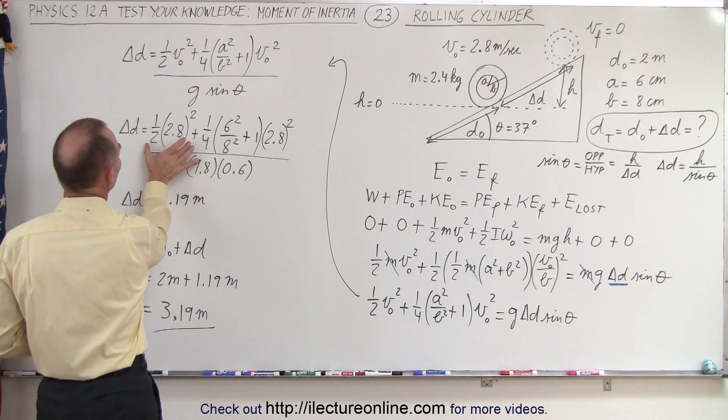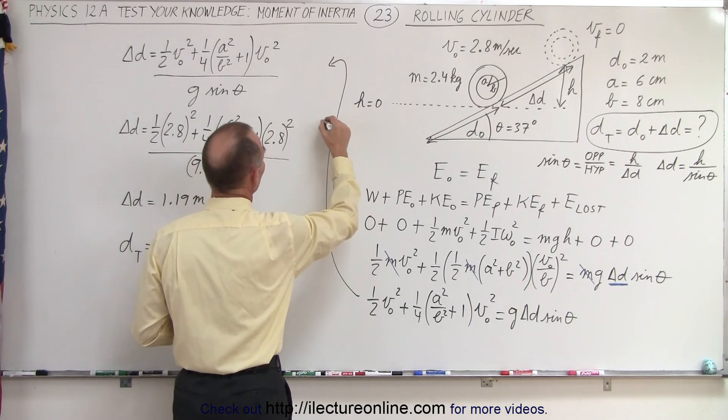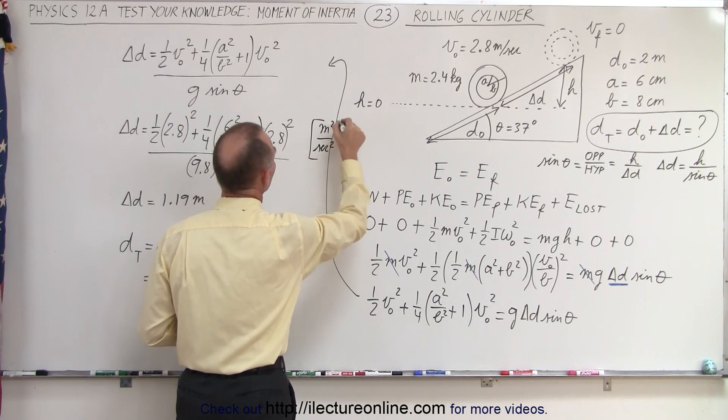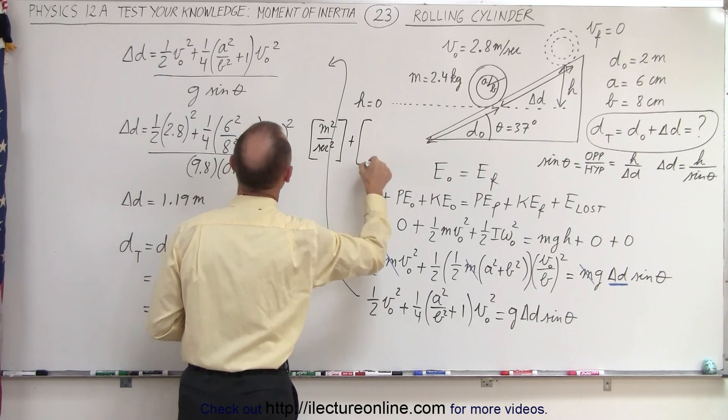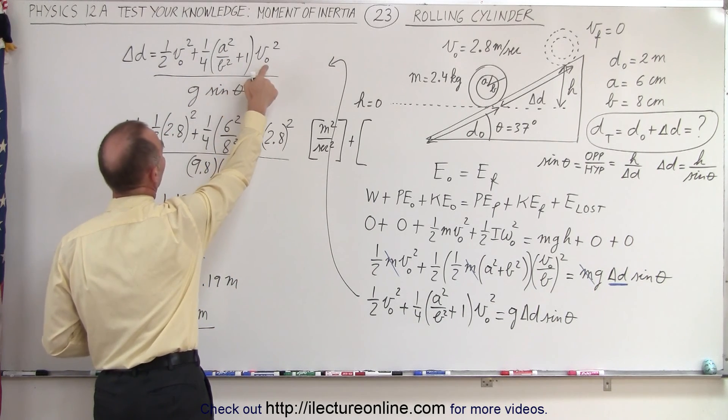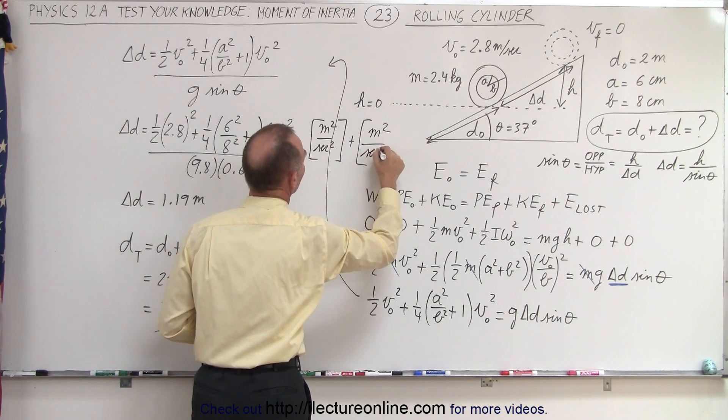So the units in this first term is going to be v squared. v is meters per second, so we have meters squared per second squared. And we add that to the units of the second term here. Now, notice that this is a ratio. The units cancel out. So again, we have meters squared divided by seconds squared.